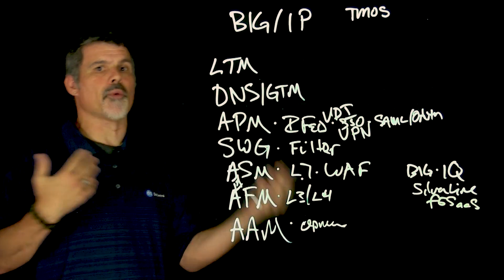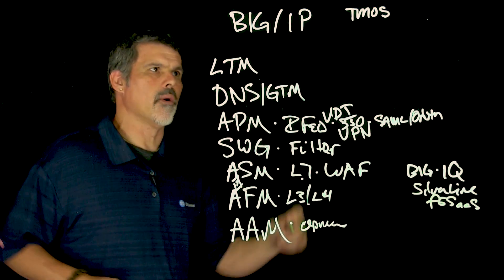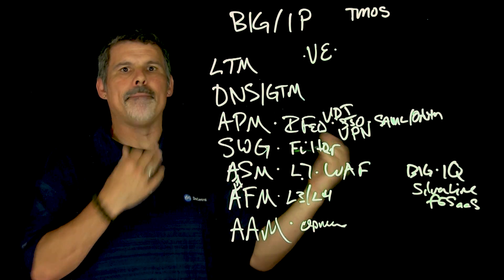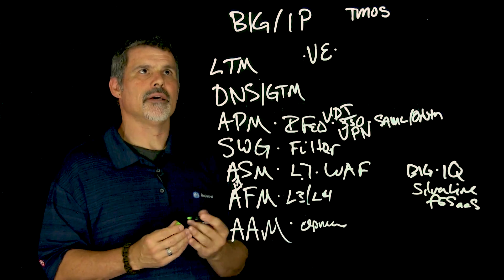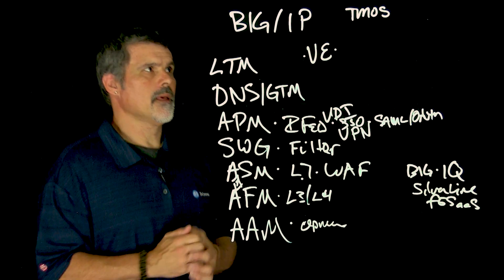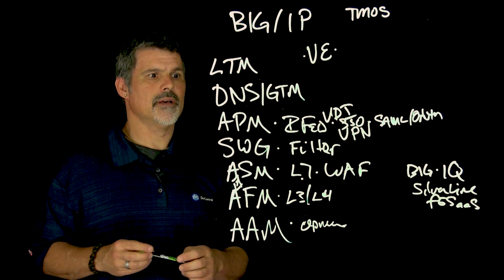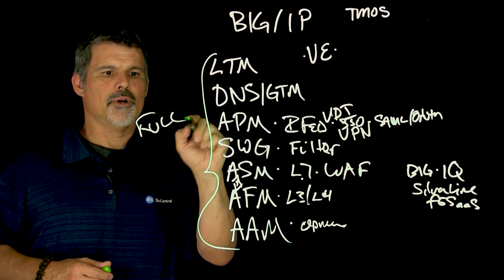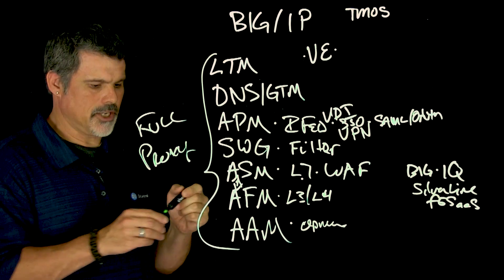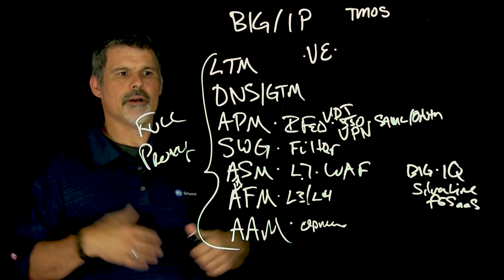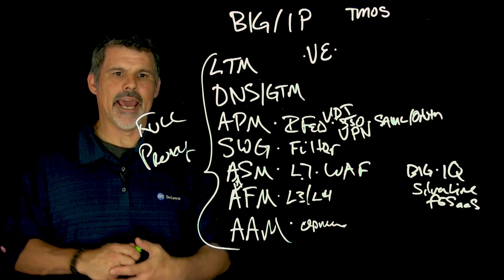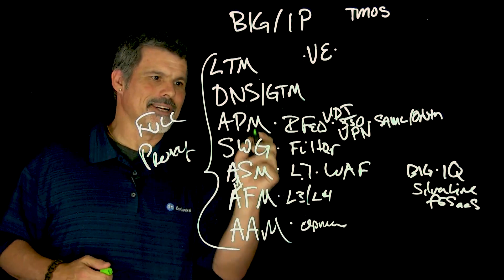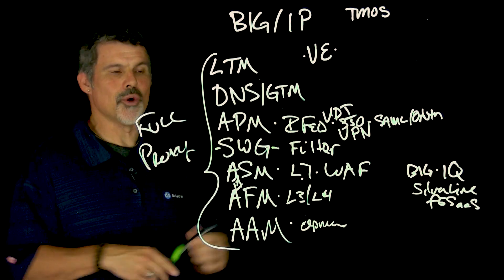We talked about software and hardware — there are also our virtual editions, our Big IP VEs. This is the full Big IP software just designed to run in a virtualized environment. Big IP, across all of these modules, provides a full proxy architecture giving you management, security, and high availability of your applications delivered to the world — and even for your users accessing applications from the world.